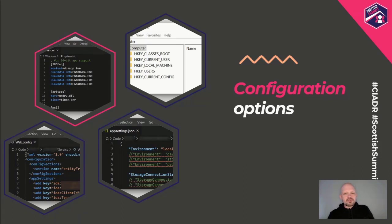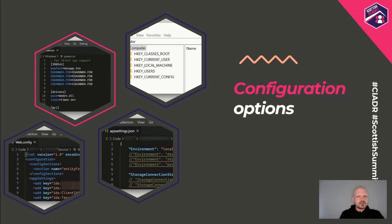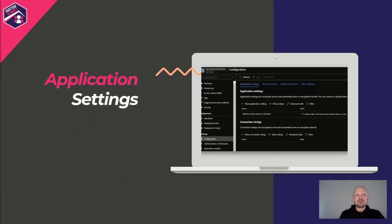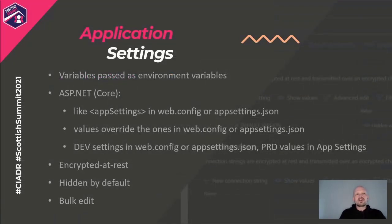We're talking about Azure because we're in the Azure developer track. When we go towards Azure and talk about web applications, we move towards App Service or maybe a Function App. As soon as you start working with App Service, you get application settings — a UI where you can store configuration. You have two types: application settings and connection strings. Those application settings are passed in as environment variables to your application.